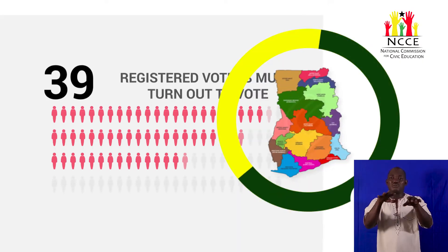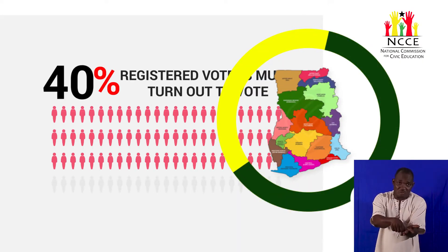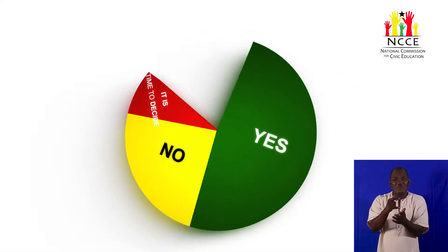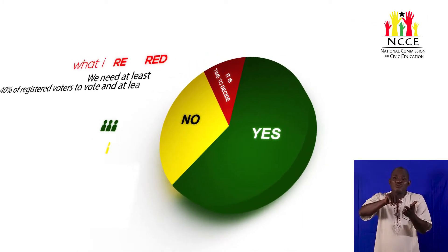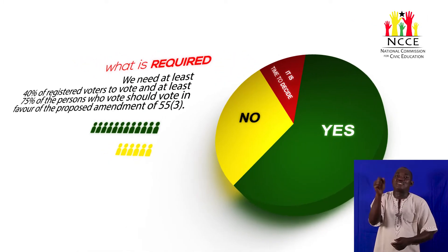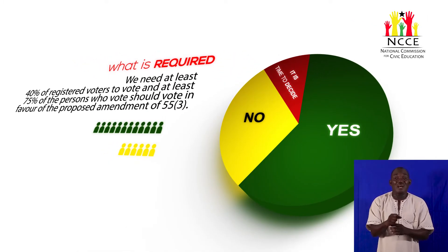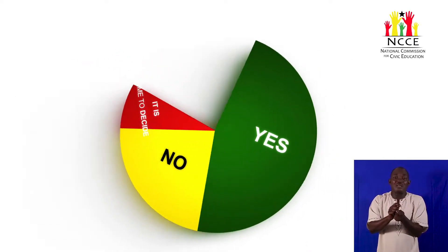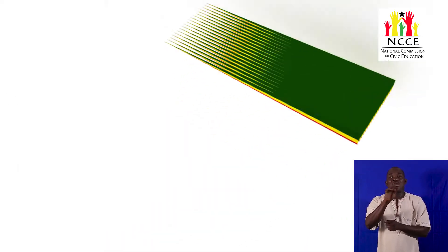The NCC says we will need at least 40% of registered voters to vote, and at least 75% of persons who vote should vote in favor of the proposed amendment of Article 55, Clause 3.